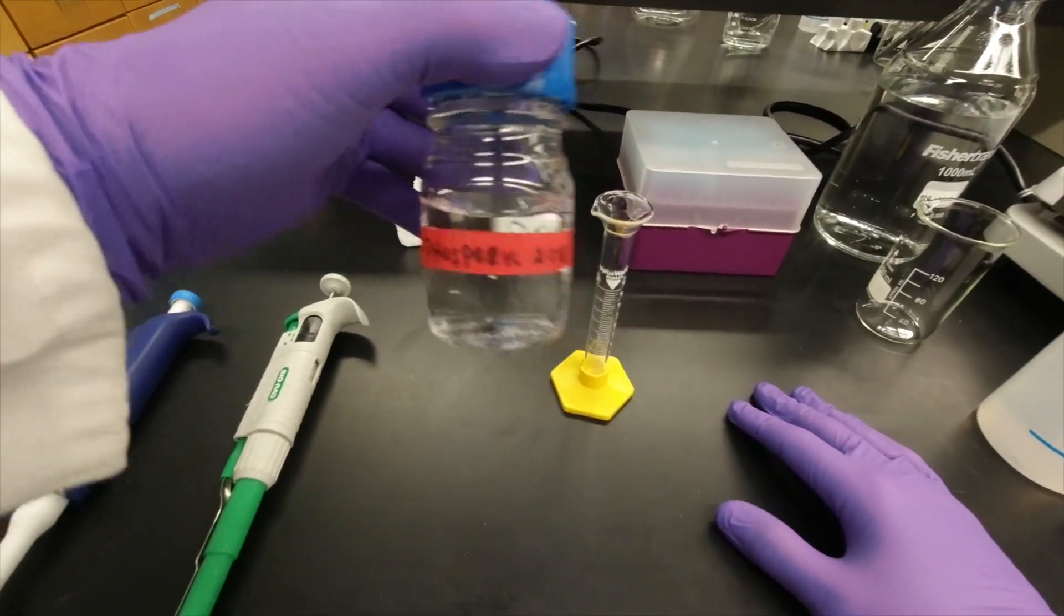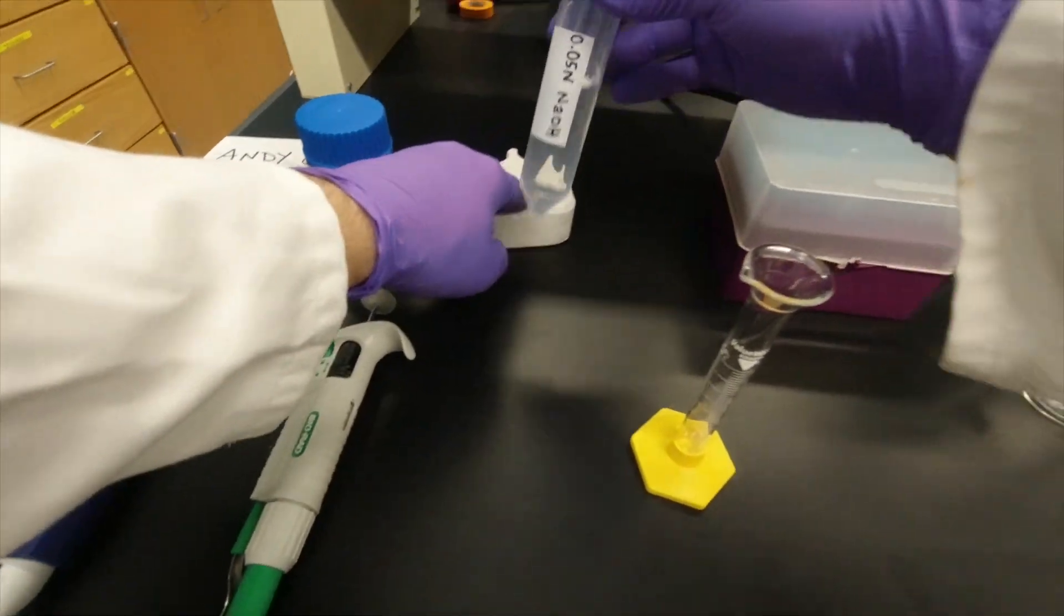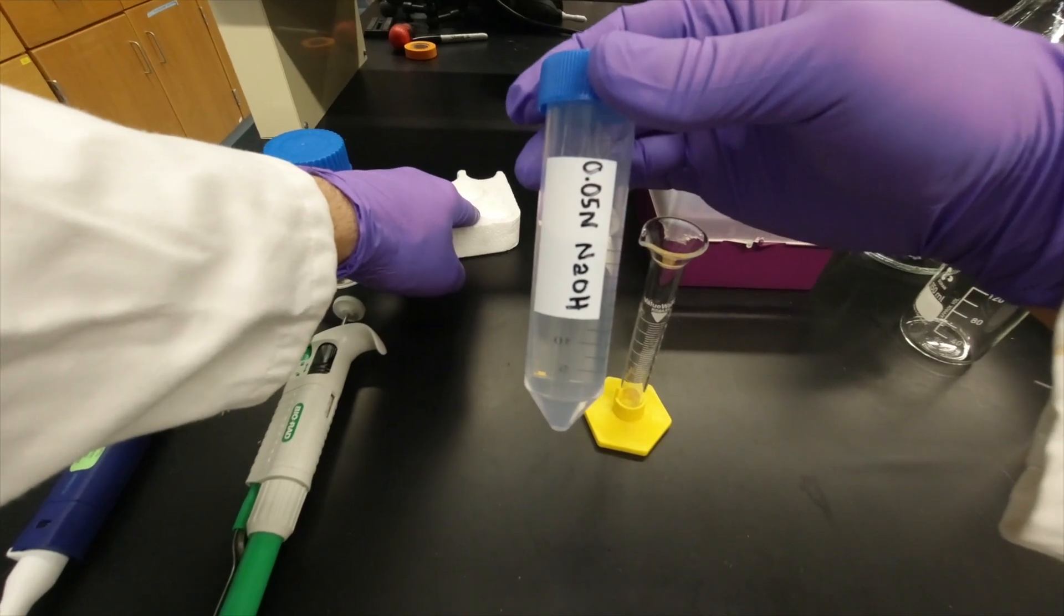Here we have our phosphoric acid, which we're going to titrate with our 0.05 normal sodium hydroxide.